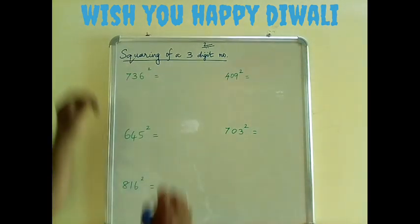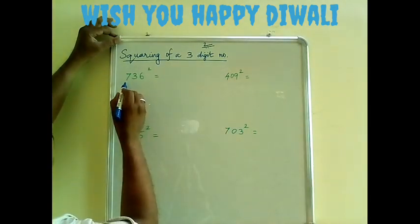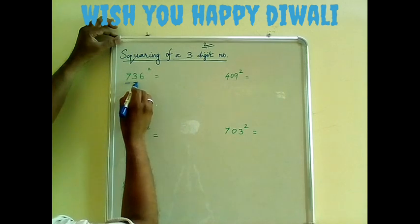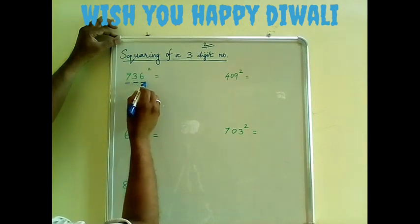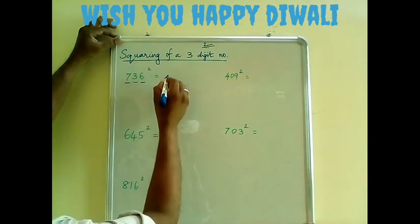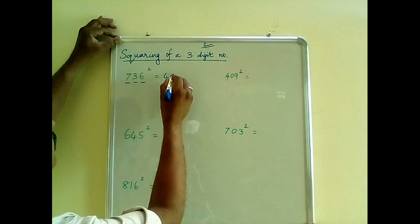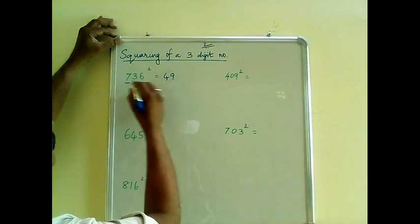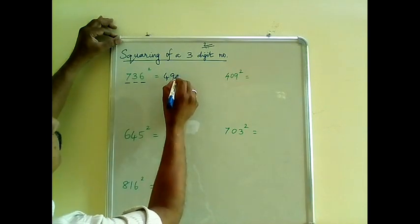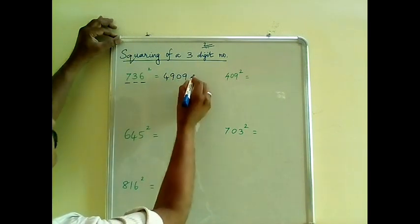Now consider 736. Simply square all three numbers: 7 squared is 49, 3 squared is 09, and 6 squared is 36.